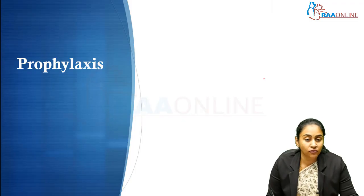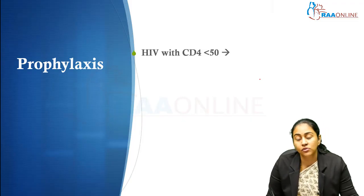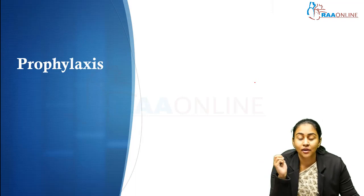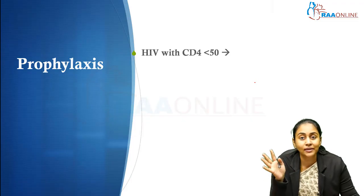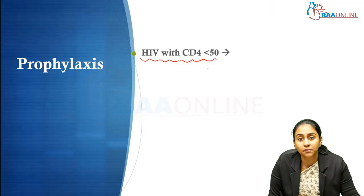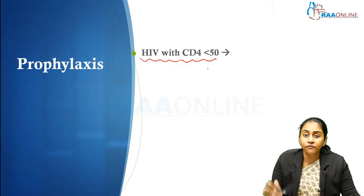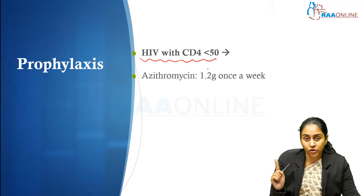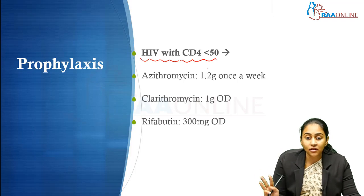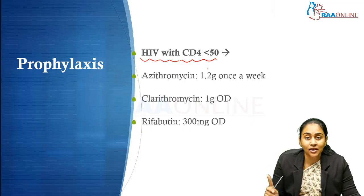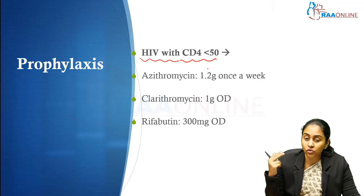That brings us to prophylaxis. How do we prevent pulmonary NTM? We have three major options for prophylaxis against NTM infections — this is particularly useful in advanced HIV infection when the CD4 count is less than 50. In HIV patients with CD4 count less than 50, who are at very high risk for disseminated NTM infections, we have three prophylactic options: weekly azithromycin at 1.2 grams, daily clarithromycin at 1 gram, and daily rifabutin at 300 milligrams.